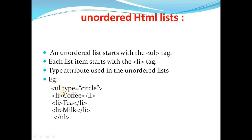Here is an example of an unordered list. If I want to make a list of beverages — that is coffee, tea, and milk — I open the UL tag and use the type attribute with the value 'circle'. The circle defines the type of bullet used. The list items coffee, tea, and milk are each written with LI tags.